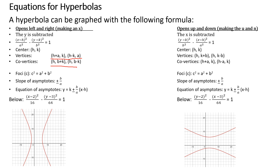The focus is found very similarly to before: C squared equals A squared plus B squared in both cases. The slope for the asymptotes is plus or minus B over A. The asymptote equation is y equals k plus or minus (B over A)(x minus h) — those are lines the hyperbola can never touch.